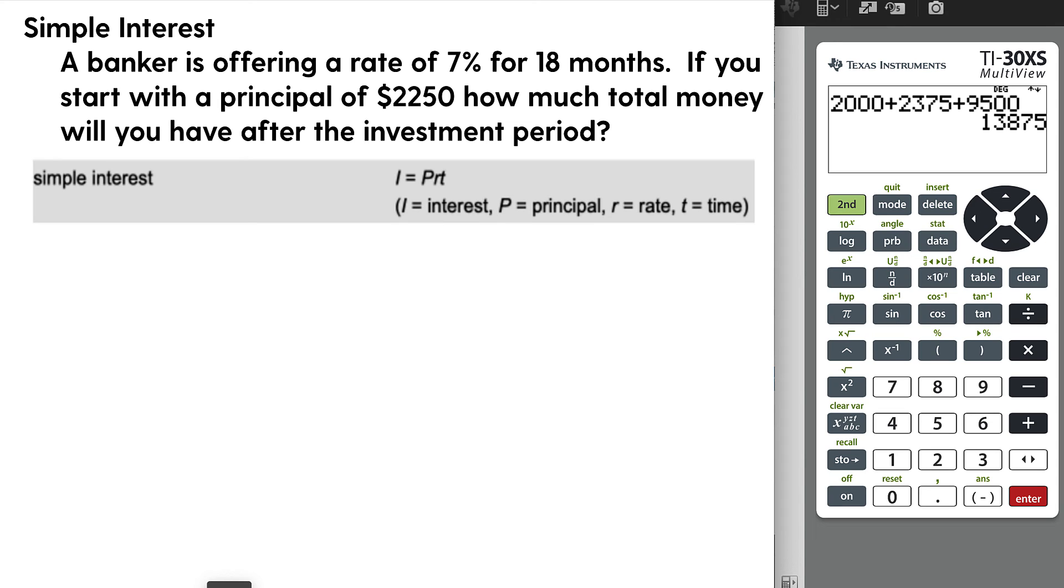A banker is offering a rate of 7% for 18 months. If you start with a principal of $2,250, how much total money would you have after the investment period? This is a real-life situation where if you put your money in a bank, in a savings account or something like that, the bank will actually pay you a little bit of money. Right now in 2021, banks are not paying much at all, certainly nowhere near 7%. Anyway, 7% would be great. Do we know the interest? Well, we are going to need to find that, even though it says the total money. So if you remember from the last problem, we need the interest, and then we will add it back to the principal. The principal, the amount of money you're giving the bank, is $2,250. The rate is 7%. And the time is 18 months, so we need to divide that by 12. 18 divided by 12 is 1.5 years.